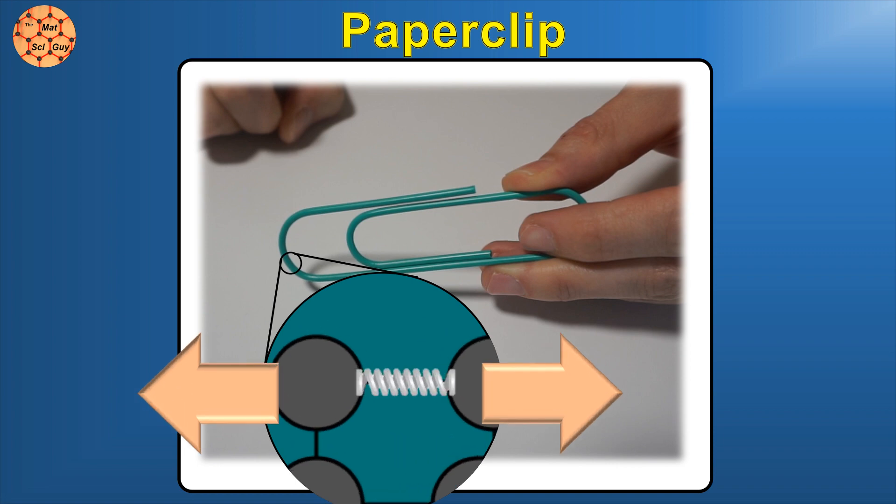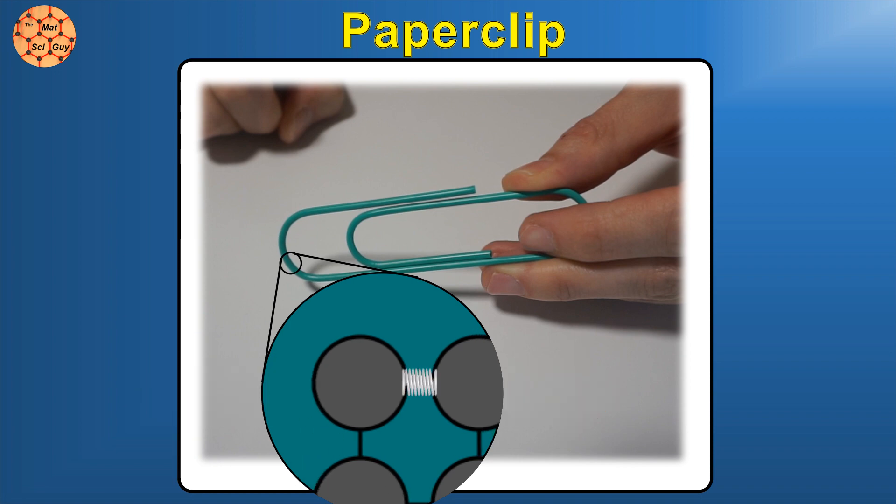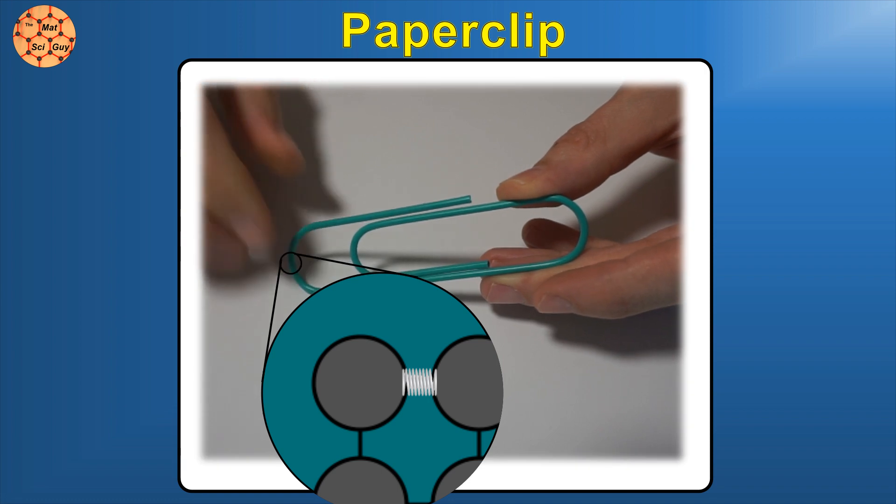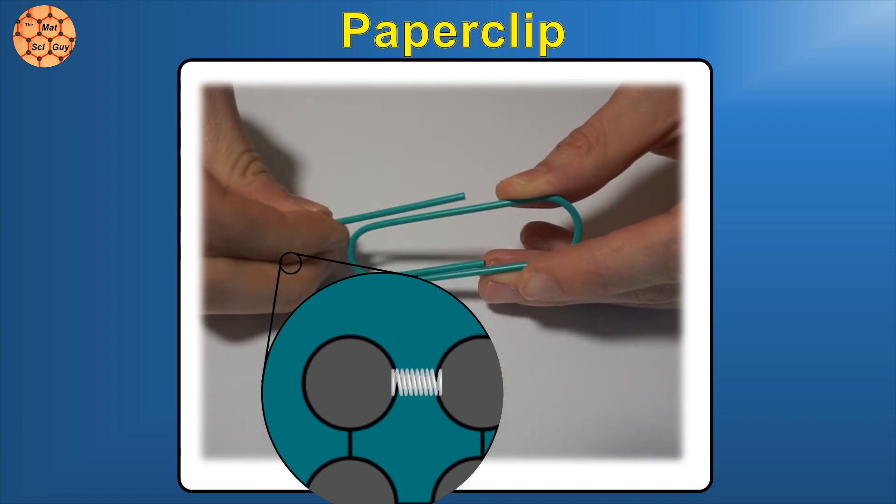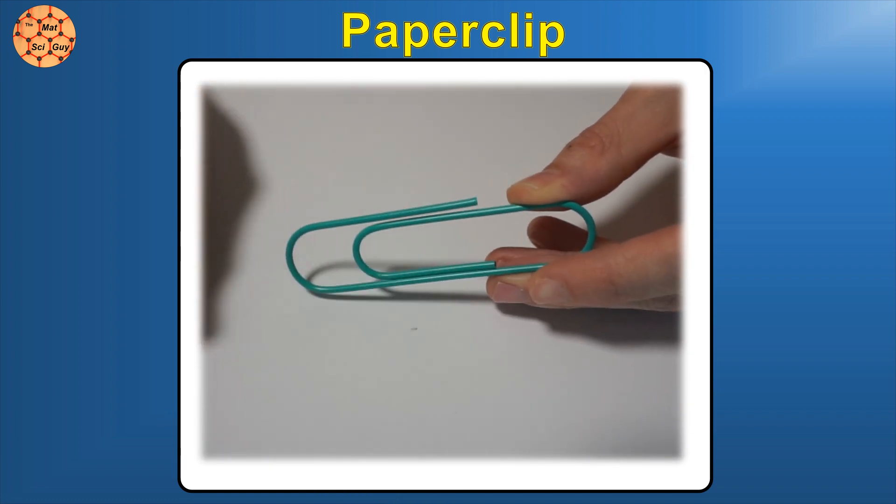More force means more displacement. It's also temporary. We haven't changed the location of any of these atoms, so once the force is removed, these atoms return to their equilibrium spacing. We can go up and down this linear elastic region and still never change the shape of our paperclip.